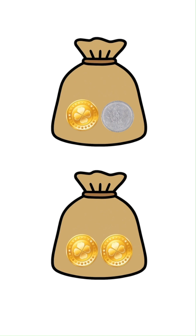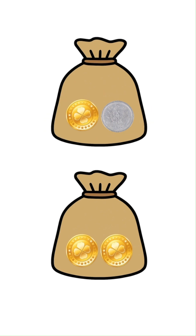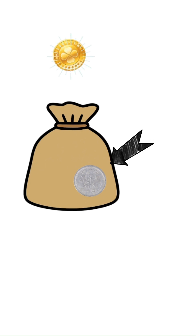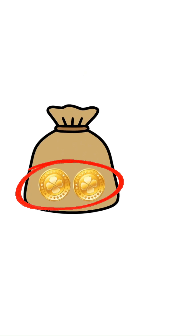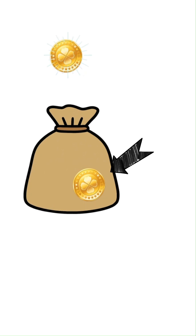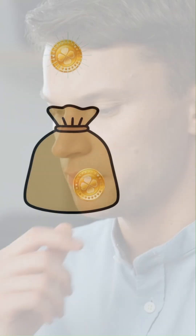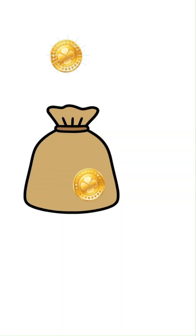Either you picked the bag with one gold and one silver coin, in which case, after picking out the only gold coin, you will have a silver coin left in the bag. Or you could have picked the bag with two gold coins, and if you picked one out, you will have another gold coin inside the bag. At this point, you might be tempted to say that the probability of the other coin in the bag being gold is one-half, but that is not the right answer.